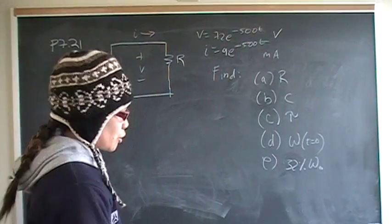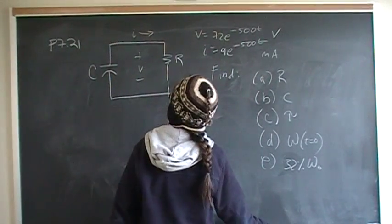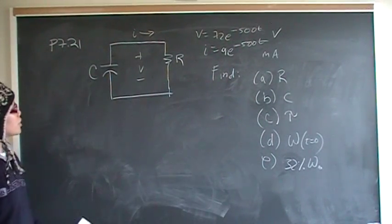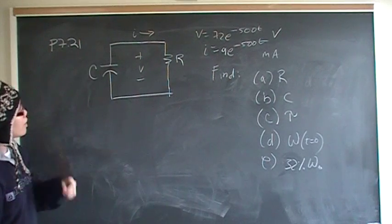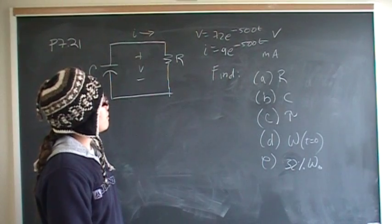Okay, so this is problem number 21 from chapter 7. We have a general RC circuit, and we have the voltage function which is 72e to the negative 500t.